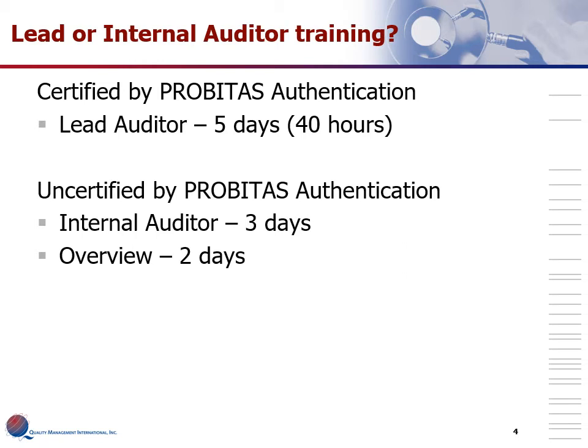So do you need Lead or Internal Auditor training? If you're looking to become a second or third-party auditor, you are looking for a certified course — a commitment of five days, a full week, starting Monday and ending Friday. That's 40 hours, not including additional time required for the examination. An uncertified internal auditor course is only three days in duration, and the overview course is two days.